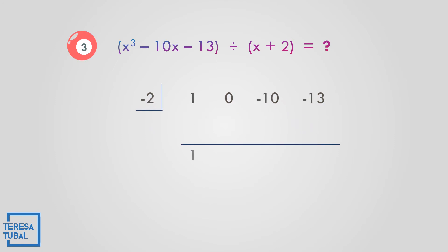Bring down 1. Then 1 times negative 2 is negative 2. 0 minus 2, subtracting and copying the sign, gives negative 2. Negative 2 times negative 2 is positive 4. Subtracting: negative 10 plus 4, copying the sign, gives negative 6. Negative 6 times negative 2 is positive 12. Negative 13 plus 12 gives a remainder of negative 1.